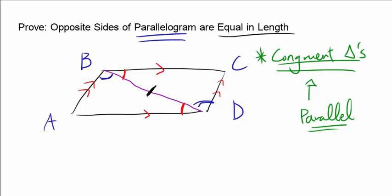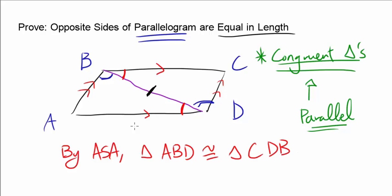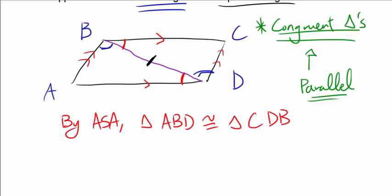We call this ASA. So by ASA congruence, triangle ABD is congruent to triangle CDB, and by this you know the corresponding sides are congruent, so AB and CD are the same.